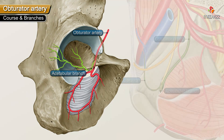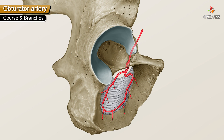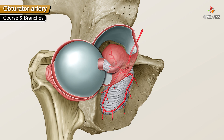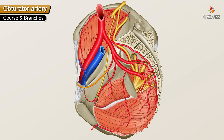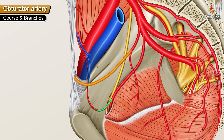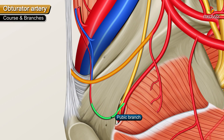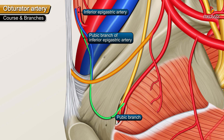The acetabular branch of the obturator artery runs through the acetabular notch to the ligament of the head of the femur, supplying the head of the femur. The pubic branch ascends to the pubic region and forms anastomosis with the pubic branch of the inferior epigastric artery.